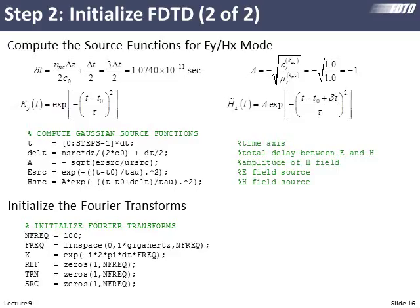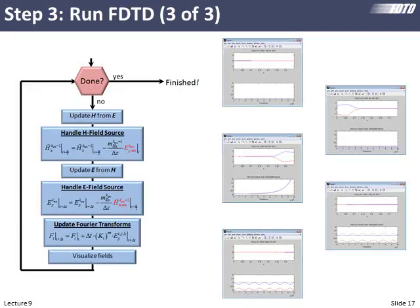Then finally, we initialized our Fourier transforms. We created our frequency axis, which had 100 points going from 0 to 1 gigahertz. Then we created another array containing another 100 points, which are our kernels, one for each frequency where we're interested. And then we initialized our reflectance, transmittance, and source Fourier transform arrays.